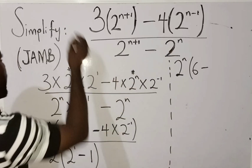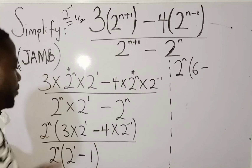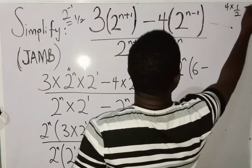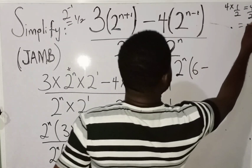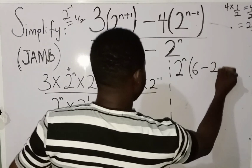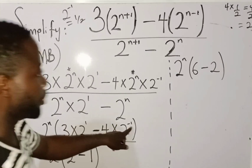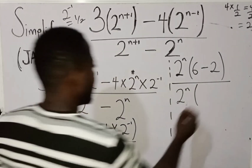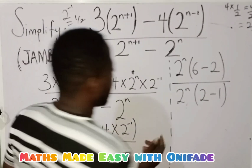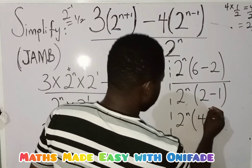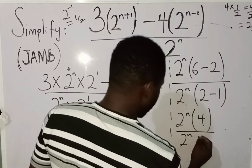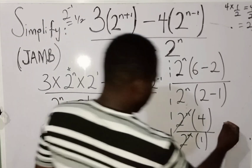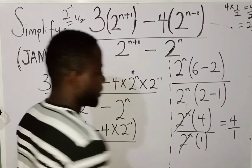Now, 2 raised to power minus 1 simply means 1 over 2. So 4 times 2 raised to power minus 1 means 4 times 1 over 2, which is 4 over 2, which equals 2. So in the numerator bracket we have 6 minus 2, which is 4. In the denominator, 2 minus 1 is 1. Now, 2 raised to power n is common in both numerator and denominator, so they cancel each other out. We are left with 4 over 1. So the final answer to this question is 4.